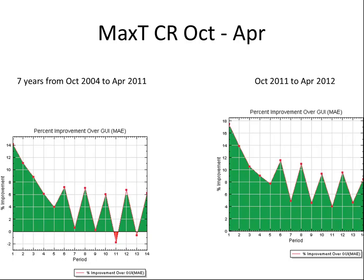I would focus more on the dots at the bottom where we basically compare ourselves at the 0Z cycle and mids to the 0Z MEX guidance. What you see is a fairly obvious improvement throughout the short term of about one or two percent, and then roughly about a four or five percent improvement over the whole extended.